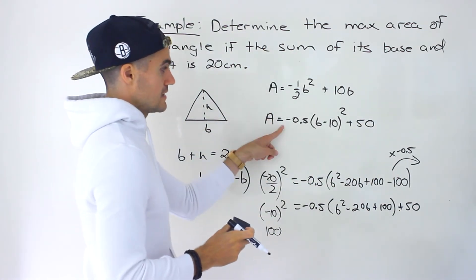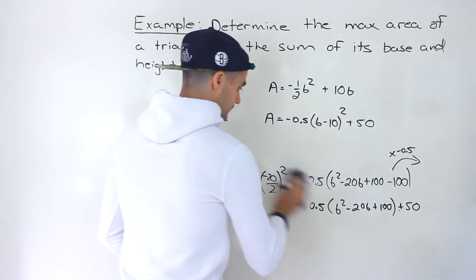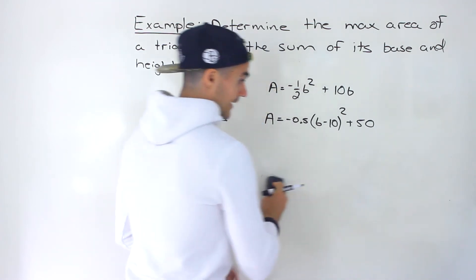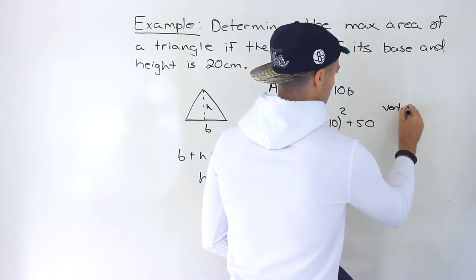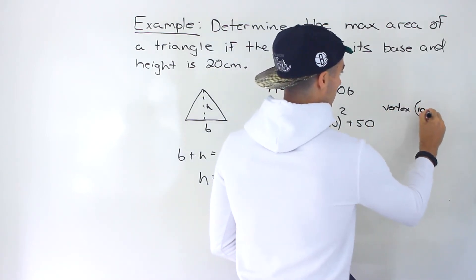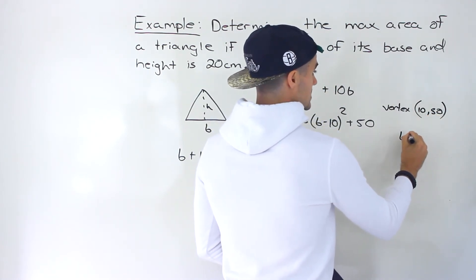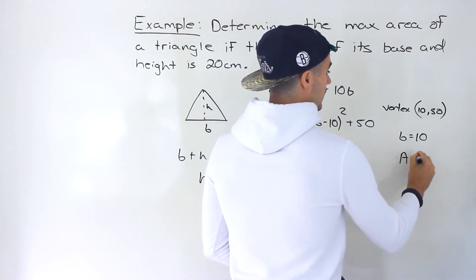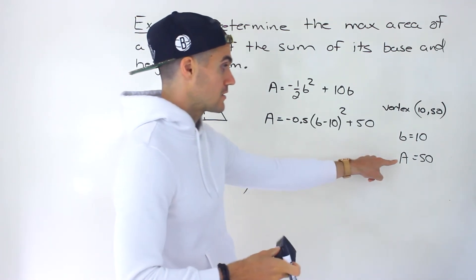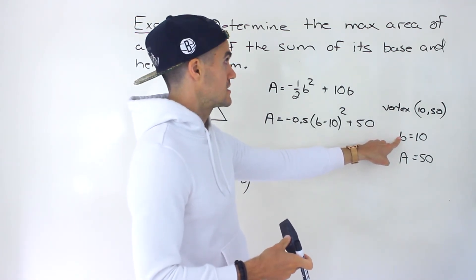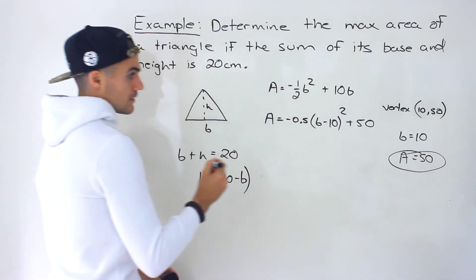So this and this are the exact same thing — we took the standard form and converted it to vertex form. Now that it is in vertex form, we can read the vertex: the vertex is at (10, 50). So the base is 10 and the maximum area is 50. That is the maximum area.